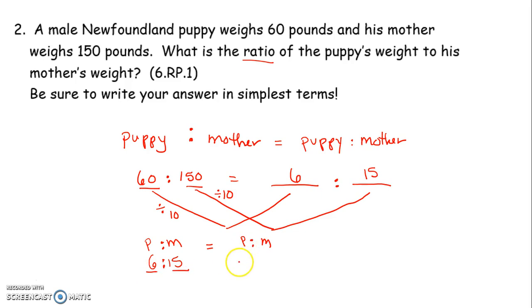So I have 6 to 15 and I'm trying to get it to simplest terms. So again, I say, is there a number I can divide both 6 and 15 by? As I look at that, I say, 6 can be divided by 3. 6 divided by 3 is 2, 15 divided by 3 is 5.